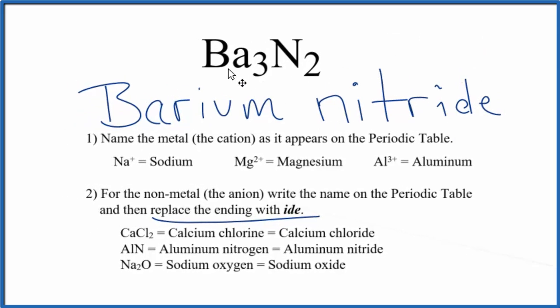So the name for Ba3N2 is barium nitride. If you were given the name and asked to write the formula for barium nitride, you'd need to realize barium forms 2+ ions when it bonds, and nitrogen forms 3- ions.